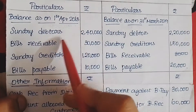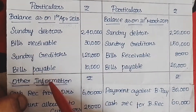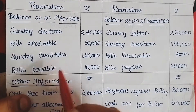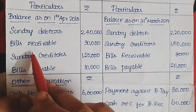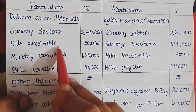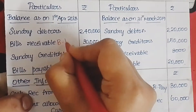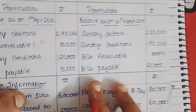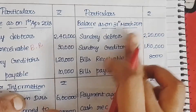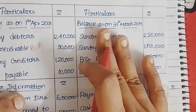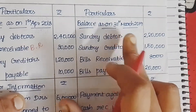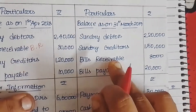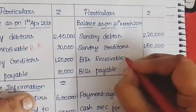Balances on 1st April — what do we need to find? Opening balance of debtors account, bills receivable account, creditors account and bills payable account. If you open the bills receivable, the opening balance is there. Let's see the balance on 31st March — that is the closing balance of debtors, creditors, bills receivable and bills payable. So bills receivable has a closing balance.